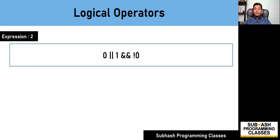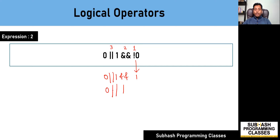Let me solve one more expression. Logical NOT has first priority, AND-AND second, and OR third. I first evaluate the NOT operator on a zero value, which results in a value of 1. Then I evaluate the AND-AND operator: non-zero AND-AND with non-zero gives 1. Finally, I evaluate the OR operator: 0 OR with non-zero gives a value of 1. So after evaluating this expression, we get the result as 1.